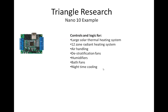Number one, this home is entirely heated with solar thermal through a 12-zone radiant heating system. It has a pretty complex heating sequence, which contains a lot of logic. It also has air handling, which moves hot air from certain parts of the house to colder parts. It also has de-stratification, which is taking hot air from high up on the ceilings and pushing it down lower.